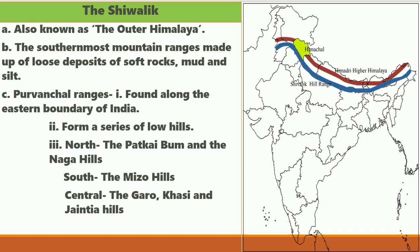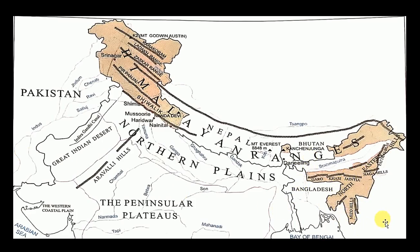The Purwanchal ranges are found along the eastern boundary of India and they form a series of low hills. They have Patkai Bum and the Naga Hills in the north, and the Mizo Hills in the south. In the central part, there are the Garo, the Khasi, and the Jayantia Hills.